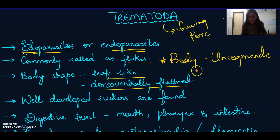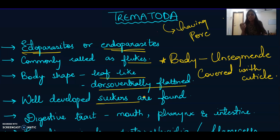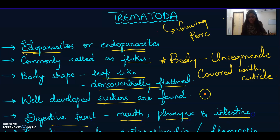The body is covered with cuticle. Well-developed suckers are also found — suckers are structures in these organisms that help them cling to the host organism very firmly. The digestive tract has a mouth, pharynx, and intestines, but anus is absent.